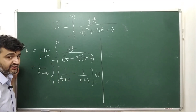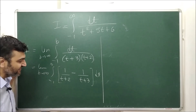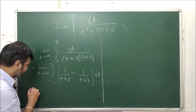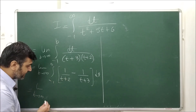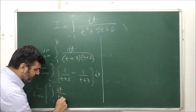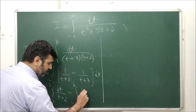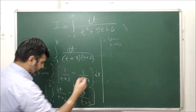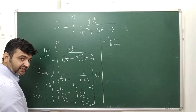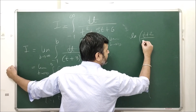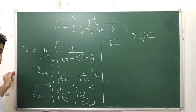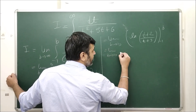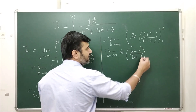Applying partial fractions, we get 1/((t+2)(t+3)) = 1/(t+2) − 1/(t+3). So I = limit B → ∞ of [integral from −1 to B of dt/(t+2) minus integral from −1 to B of dt/(t+3)]. Integrating each term gives ln|t+2| − ln|t+3|, which equals ln|(t+2)/(t+3)|, evaluated from −1 to B.